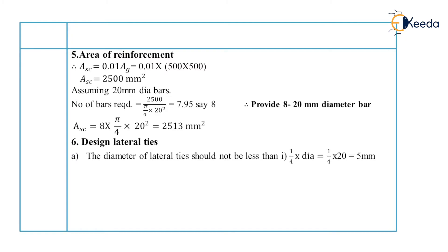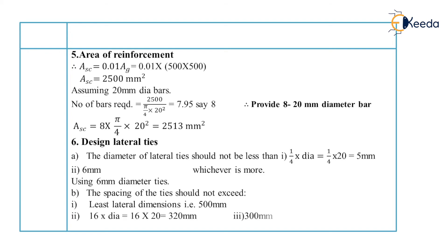And the diameter of lateral ties should not be less than 1 by 4 of diameter that is 1 by 4 into 20 which is equal to 5 mm or 6 mm whichever is more. Therefore we will use 6 mm diameter ties and the spacing of the ties should not exceed least lateral dimensions that is 500 mm or 16 into diameter that is 320 mm or 300 mm whichever is less. Therefore we are going to provide 6 mm diameter of lateral ties at 300 mm center to center spacing.